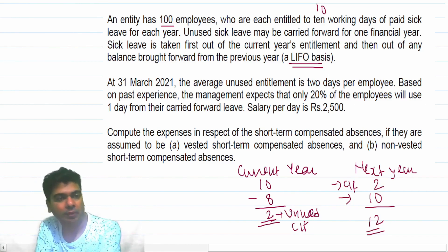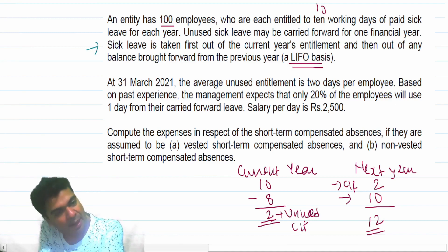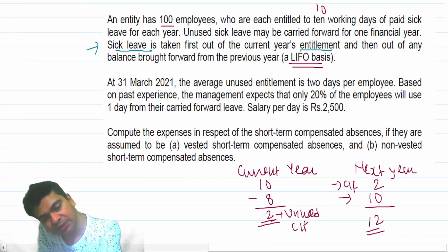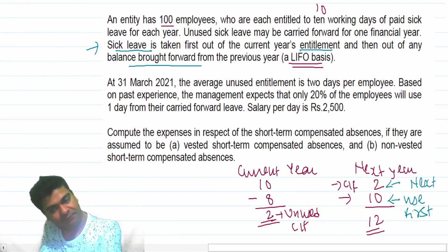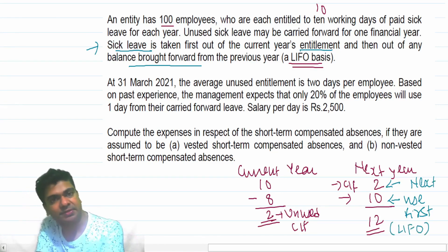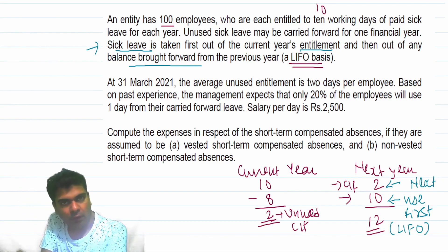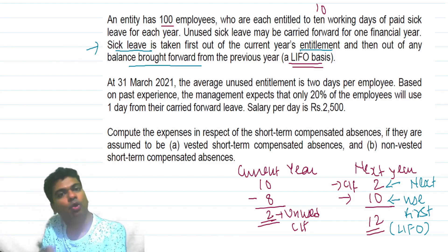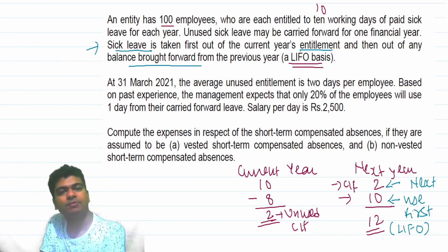So in total you are getting 12 days. And if you read this paragraph, they say sick leave is taken first out of the current year's entitlement and then out of any balance brought forward. So this 10 days you have to use first and then these 2 days you will use next — this is what they are calling the LIFO basis, last in first out. The carry forward will not be utilized first; first you have to enjoy the benefit of the current year's leave entitlement, then you can enjoy the benefit of what has been carried forward.